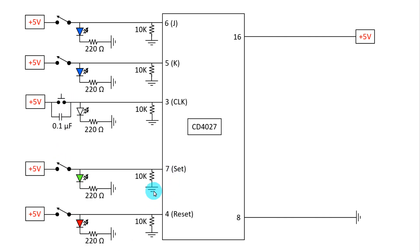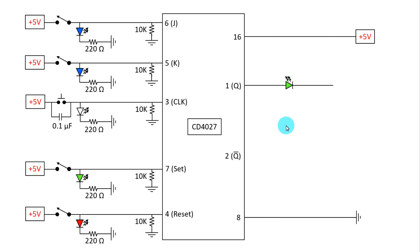Pin number 7 is set and pin number 4 is reset. For the output, pin number 1 is Q and pin number 2 is Q bar. With pin number 1 we are going to connect a green LED, then a 220 ohm resistor to ground. And likewise, the same connection is done for Q bar.